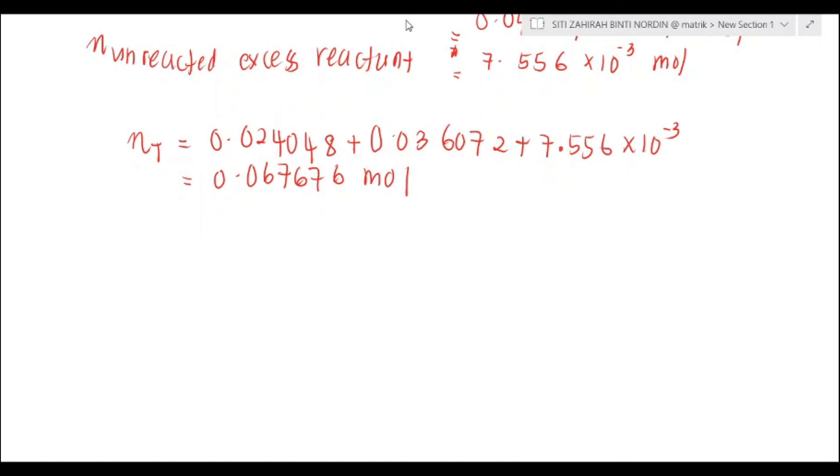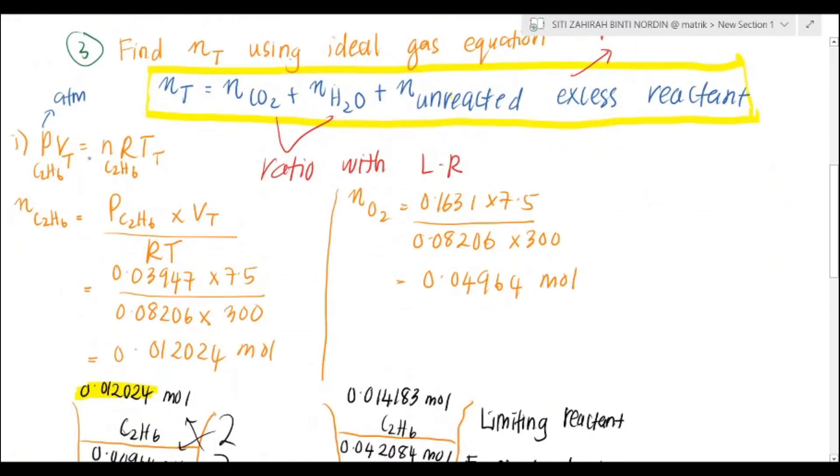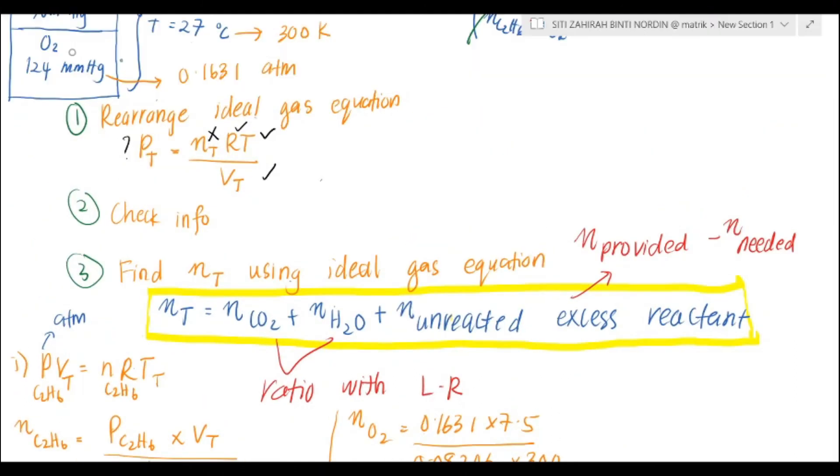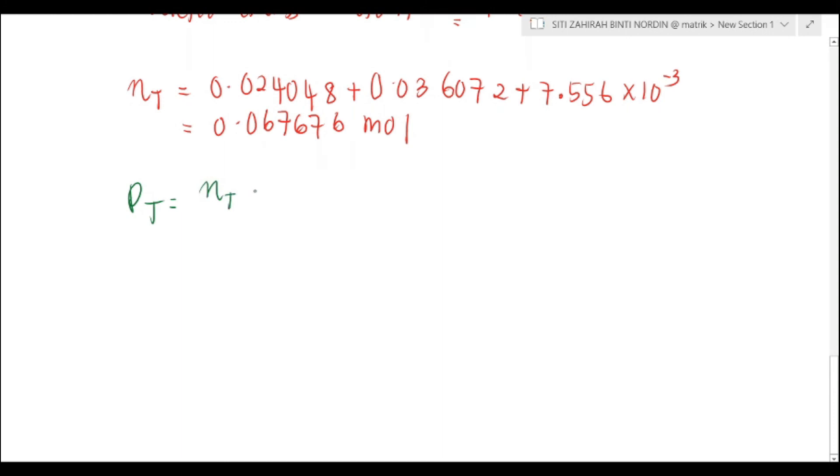Lastly, we can figure out our total pressure. We've got the mol total already. Now we can calculate our total pressure, which is the mol total times RT divided by volume total. So, 0.067676 times 0.08206 times 300 divided by 7.5. You've got 0.22214 atm.